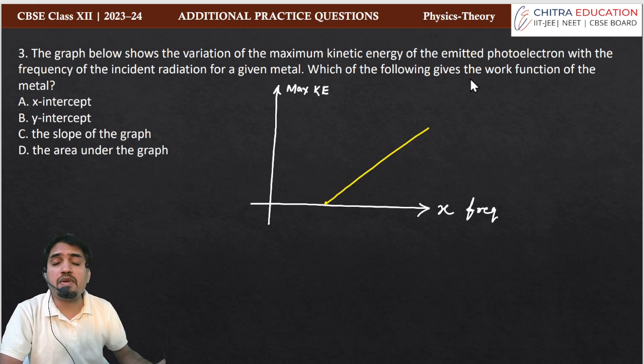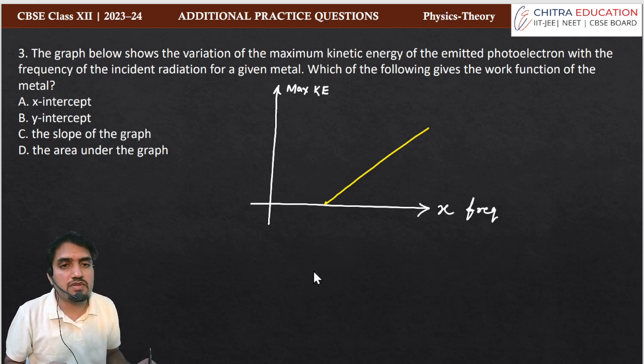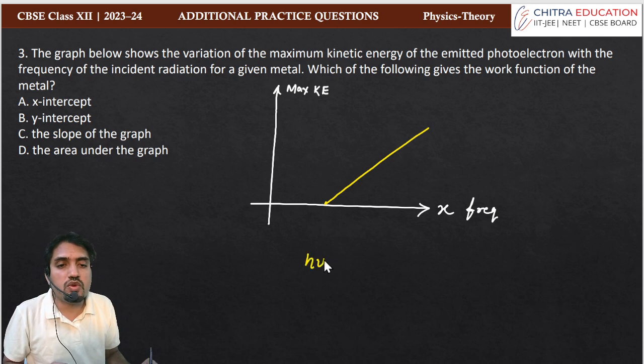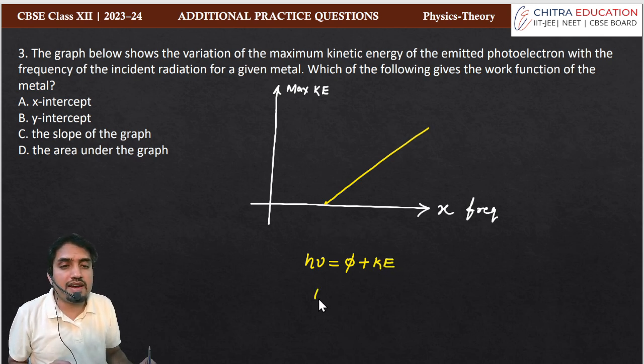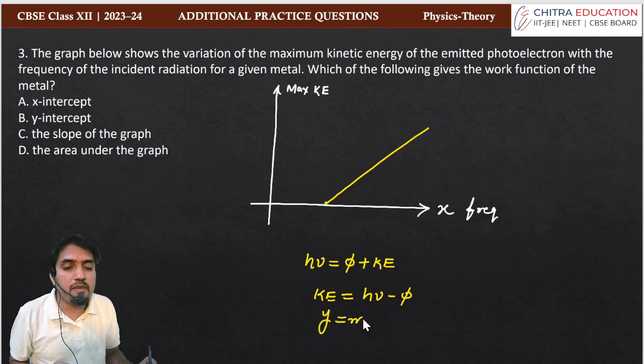Here we understand the concept of Einstein's photoelectric equation. Here we write: h into nu is equal to work function φ plus kinetic energy. Here we write maximum kinetic energy as h into nu minus φ. If we compare with y is equal to mx plus c,